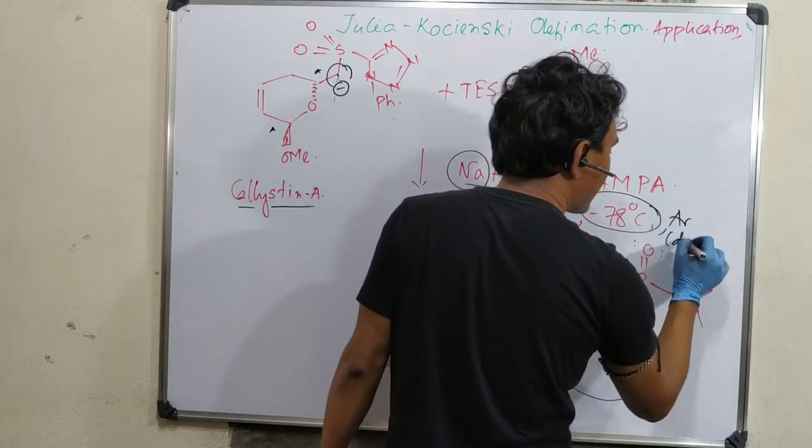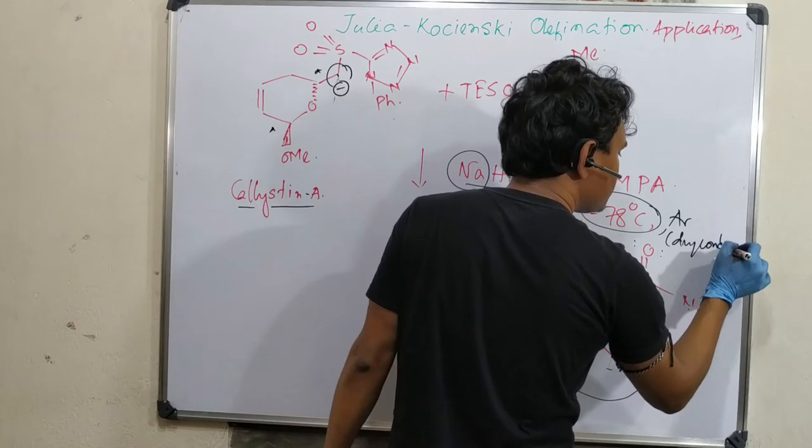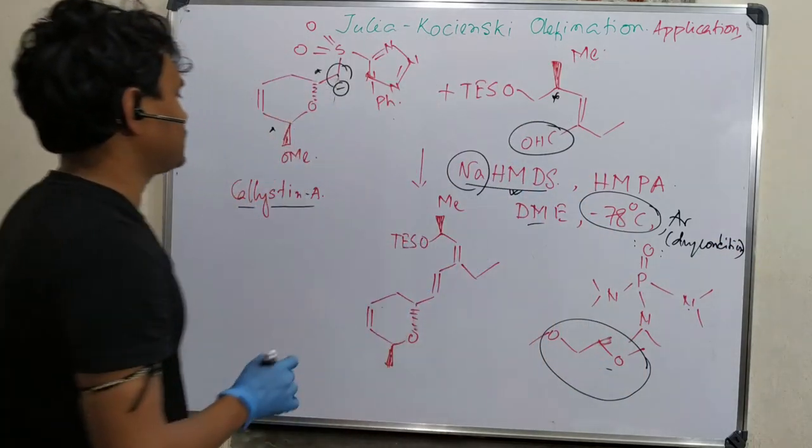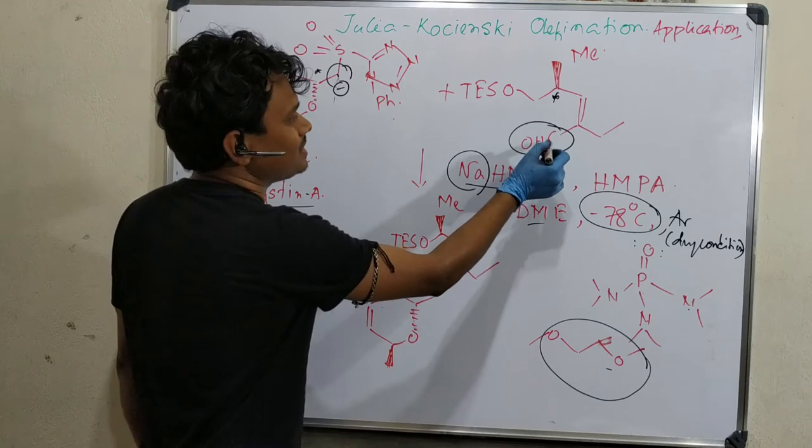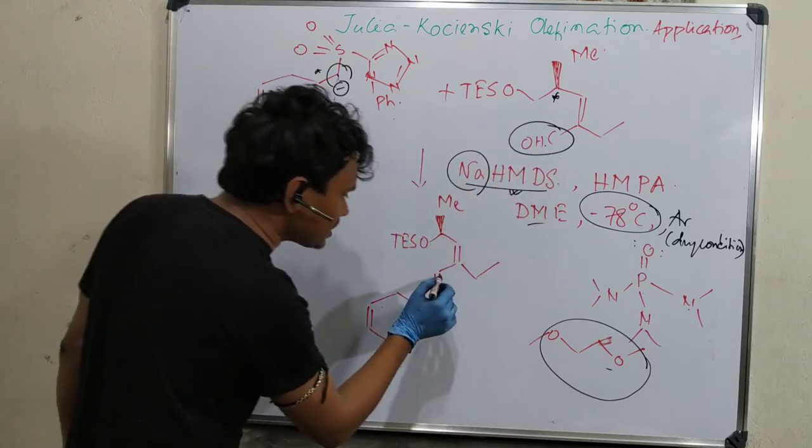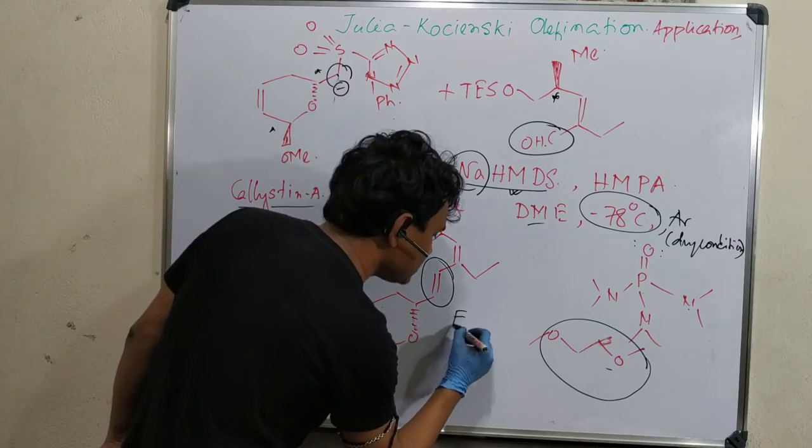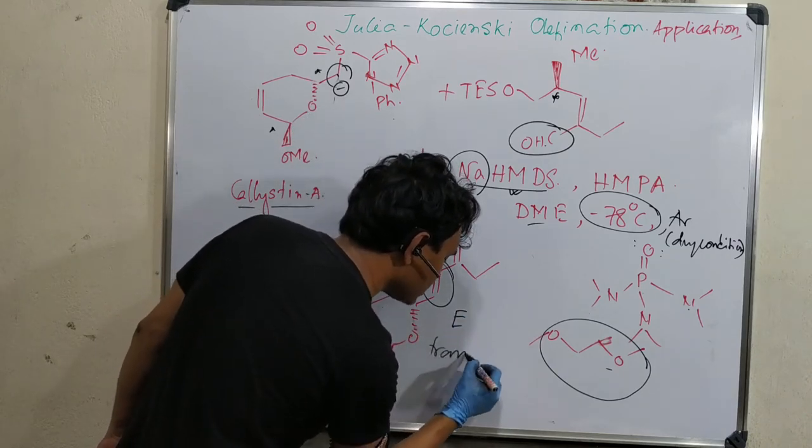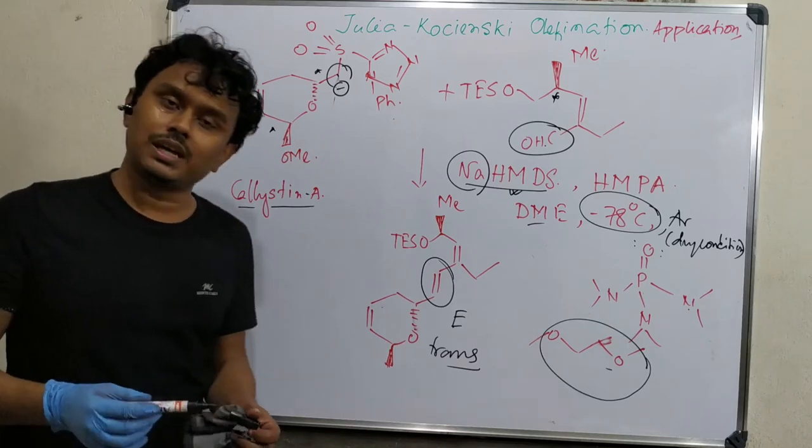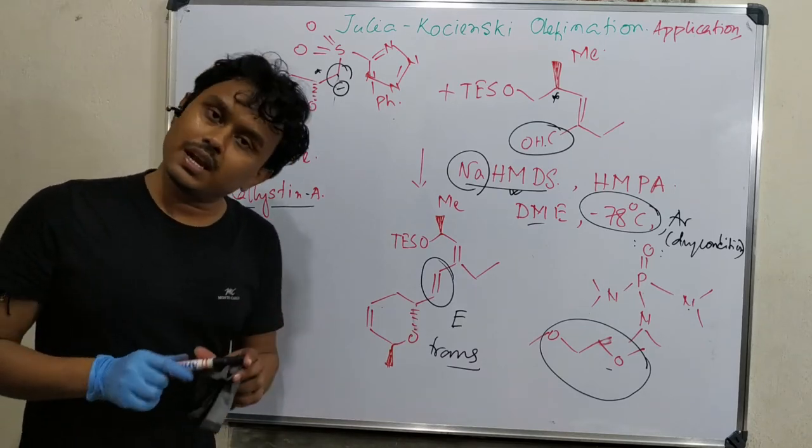Ultimately what happens - this and these react to produce this double bond here and produce this E isomer or trans isomer. This is one of the applications of Julia-Kocienski olefination. This is the end of the video.